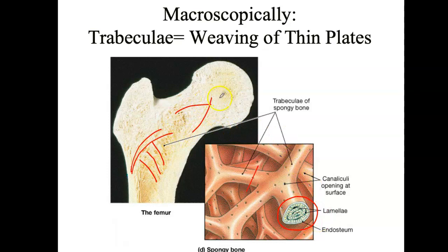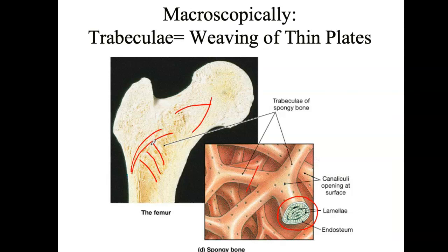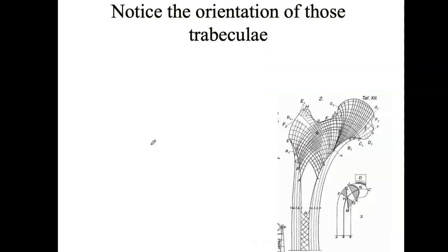Let's go back to these lines. Looking at them in more detail, you notice there's this orientation of those trabeculae. They're called trabeculae — these struts of bone oriented in different directions. Think about why they would be that way: some are drawn like this, some in the opposite direction, some coming up and others coming around. What is it about the orientation of those trabeculae?